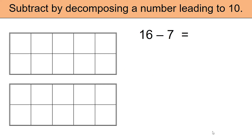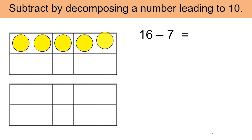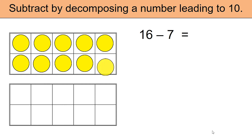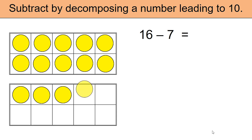Using two tens frames, we need to subtract 7 from 16. Let's set up the 16 to begin with: 1, 2, 3, 4, 5, 6, 7, 8, 9, 10, 11, 12, 13, 14, 15, 16. As you can see, we needed both tens frames to set up the 16. Let's revisit the question — we need to remove 7 from 16.